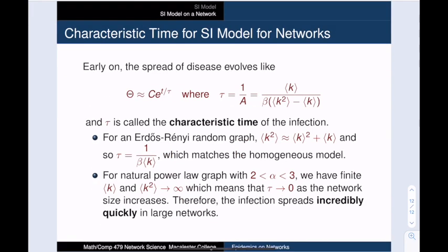In particular, it will be useful for us to define a new constant, tau, as equal to 1 over A. We call tau the characteristic time of the infection. Tau measures how quickly the disease spreads through the population. And when you look at an Erdős-Rényi random graph, the spread matches the simplified model where we treat all the vertices as if they have the same degree.